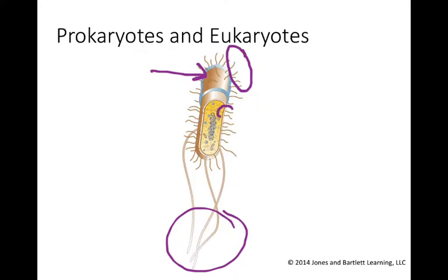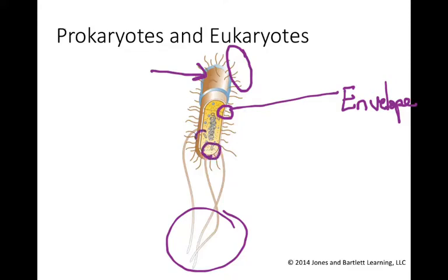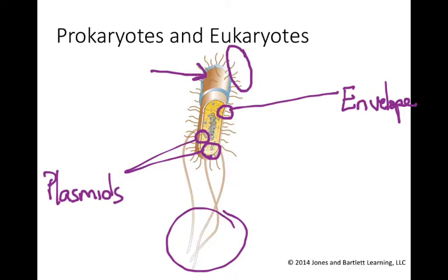We have layers of cell membrane and peptidoglycan collectively known as the cell envelope, and we'll talk about the importance of this envelope in a later lecture. On the inside of the cell, we have ribosomes, proteins, and genes carrying out the necessary functions of this microorganism. We've also got plasmids, which are short fragments of DNA. These plasmids can carry genes that are not necessary for life, but they enhance the lifestyle of the microorganism — for example, encoding antibiotic resistance genes or genes that allow the organism to become pathogenic.